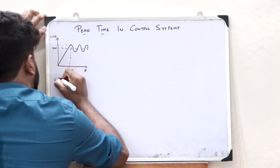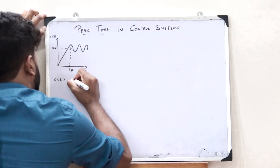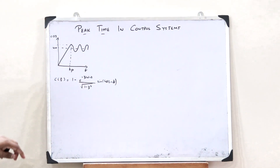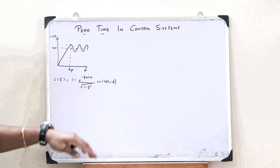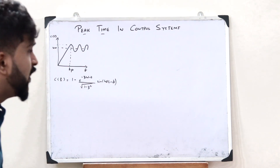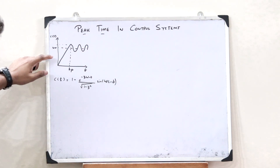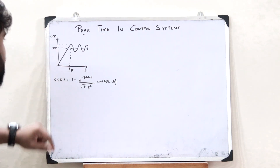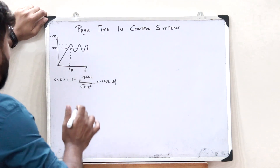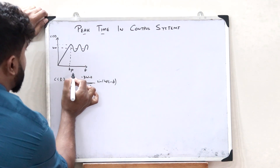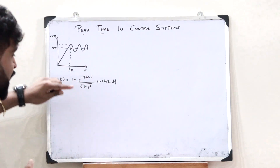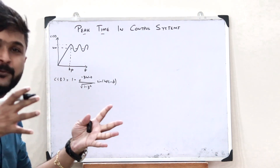Let us assume the time response in the case of an underdamped control system, which is given by C(t) = 1 minus e raised to minus zeta omega_n t, divided by root of 1 minus zeta squared, into sine of omega_d t plus phi. At the peak time, when this value is at the peak, the slope of this particular curve is equal to 0.